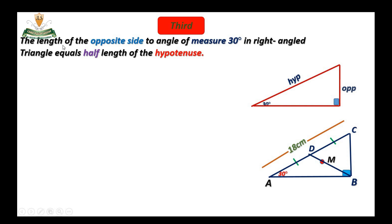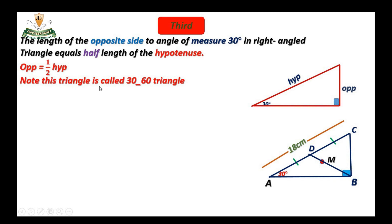Third rule: the length of the side opposite to the angle of measure 30 degrees in a right-angled triangle equals half the length of the hypotenuse. The angle of 30 degrees has an opposite side equal to half the hypotenuse. This triangle is called a 30-60 triangle.